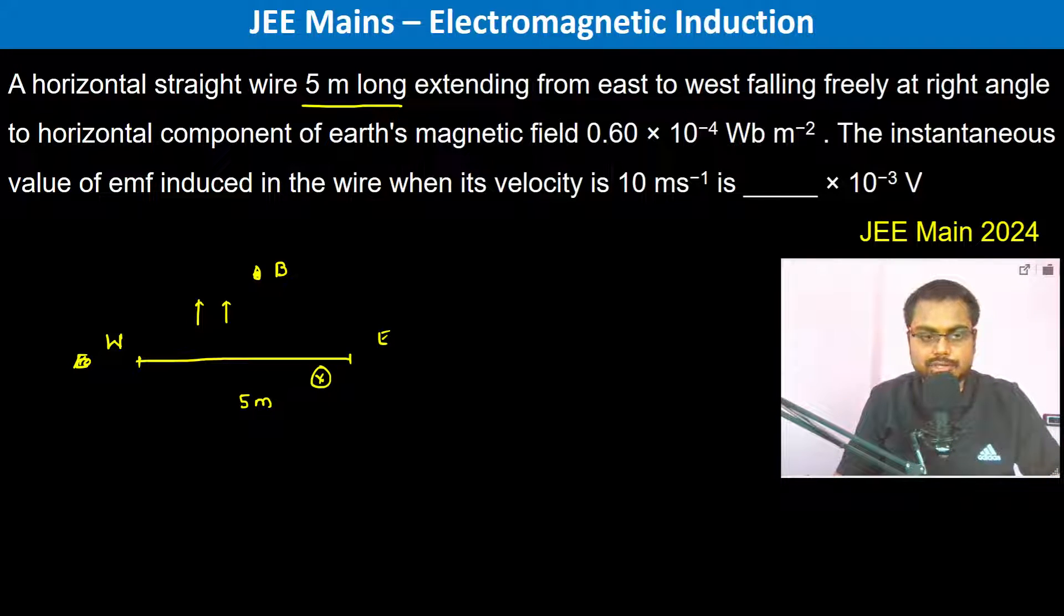The instantaneous value of EMF induced in the wire is V cross B dot L. So V cross B dot L—in this direction it's going to be positive. V cross B, so what is...